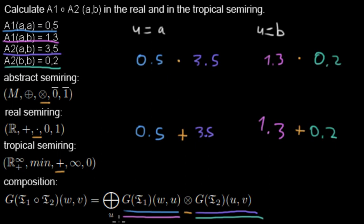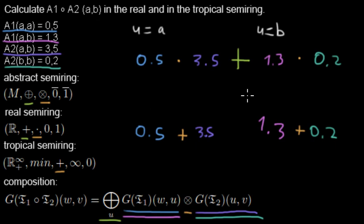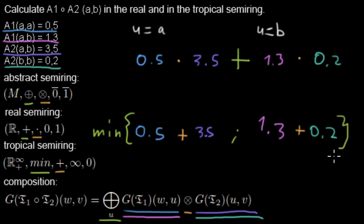Then we want to sum up over all possible U values. For that we need to know what our addition is. In the real semi-ring, this is standard plus, so we write a big plus between those weight products. For the tropical semi-ring, the plus is the minimum, so we find the minimum of both of those weights.